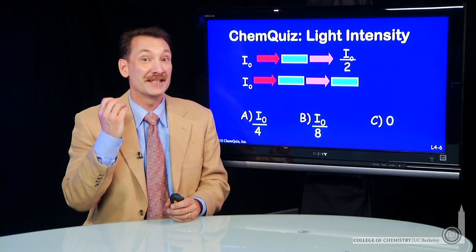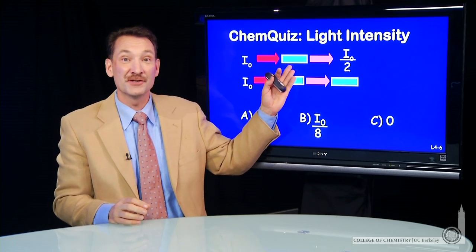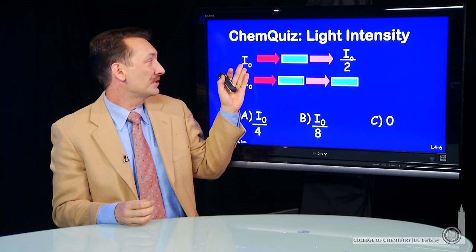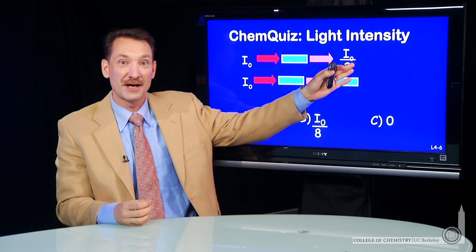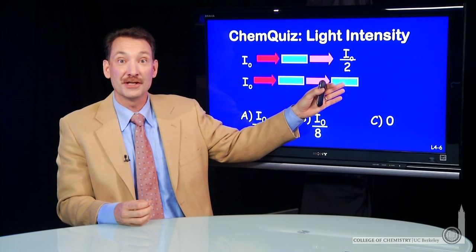So we've been talking about intensity, the brightness of light, in terms of attenuating it or reducing it with a filter. So an original intensity reduced to half the brightness by a single filter, what would be the effect of an identical filter put in the path again?